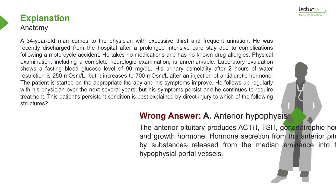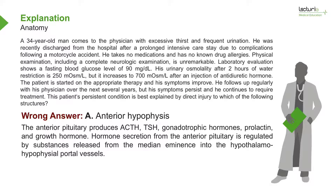A, anterior hypophysis, is the wrong answer. The anterior pituitary produces ACTH, TSH, gonadotrophic hormones, prolactin, and growth hormone. Hormone secretion from the anterior pituitary is regulated by substances released from the median eminence into the hypothalamo-hypophysial portal vessels.